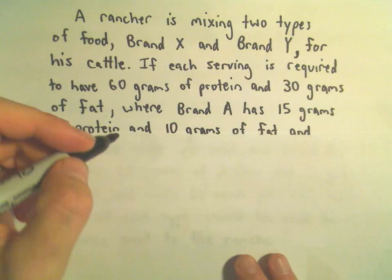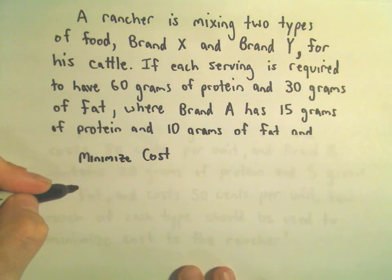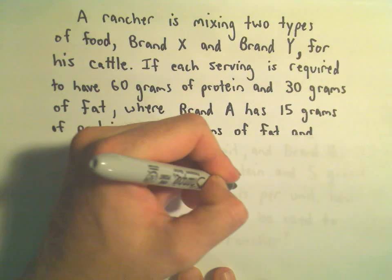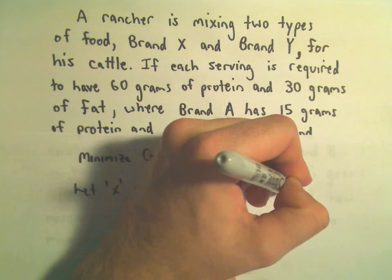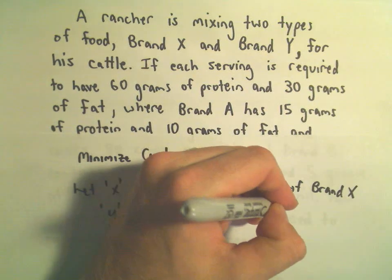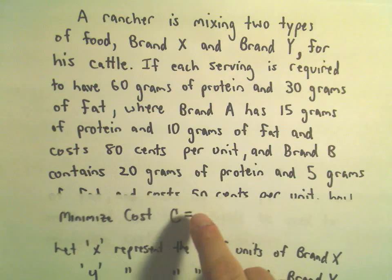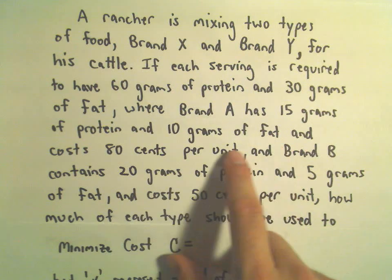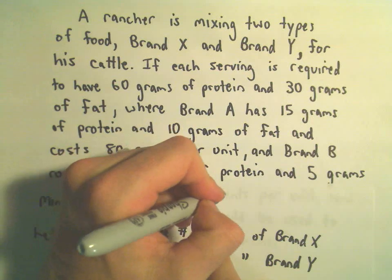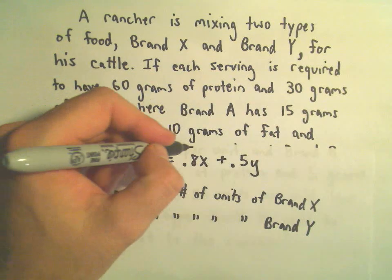We're trying to minimize his cost. Let's define our variables. Let X represent the number of units of brand X, and let Y represent the number of units of brand Y. His cost would be 0.8 per each unit of brand X, plus 0.5Y for brand Y at 50 cents per unit. So our cost function is 0.8X plus 0.5Y, and this is what we're going to try to minimize.